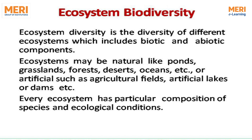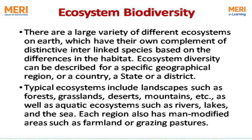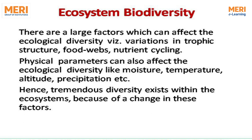Ecosystem biodiversity is the diversity of different ecosystems, which includes biotic and abiotic components. Ecosystems may be natural — like ponds, grasslands, forests, deserts, and oceans — or artificial, such as agricultural fields, artificial lakes, or dams. Every ecosystem has a particular composition of species and ecological conditions. There is a large variety of different ecosystems on earth, each with distinct interlinked species based on differences in habitat. Ecosystem diversity can be described for a specific geographical region, country, state, or district. Typical ecosystems include landscapes such as forests, grasslands, deserts, and mountains, as well as aquatic ecosystems such as rivers, lakes, and the sea.